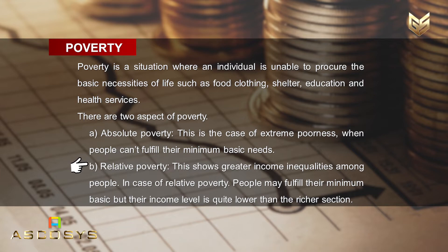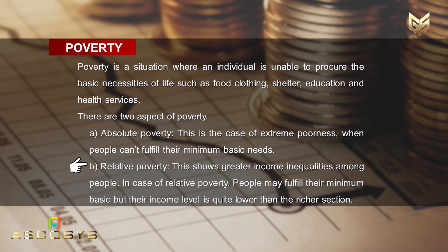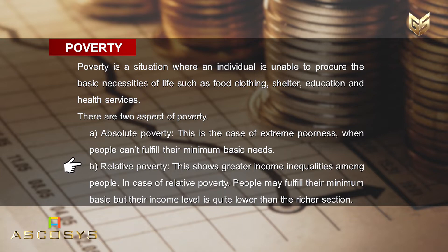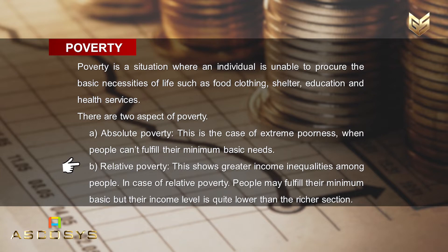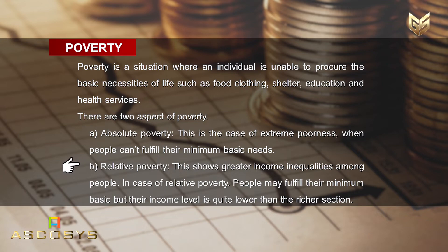The second aspect of poverty is relative poverty. Relative poverty shows greater income inequalities among people. In case of relative poverty, people may fulfill their minimum basic needs — such as food, clothing, etc. — but their income level is quite lower than the richer section of society.